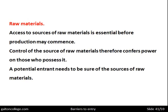Access to raw materials is essential before production may commence. A company must be able to find a supply of raw materials — if it can't, the business can't start. Control of the source of raw materials confers power on those who possess it. Existing companies producing a particular product may already control the source of raw materials, having secured their own supplies, and in doing so they block potential entrants. There is no point investing in premises, capital, and machinery only to find that raw materials cannot be obtained.